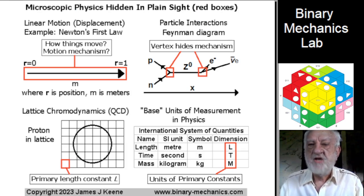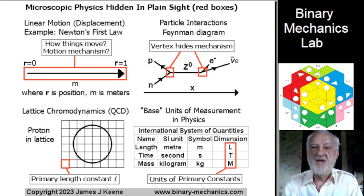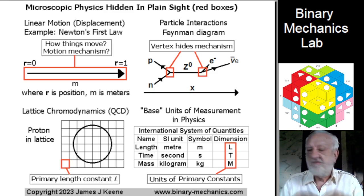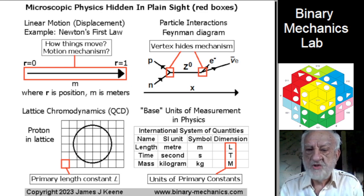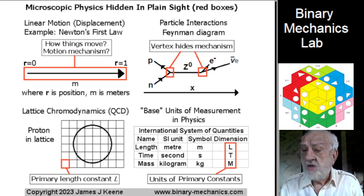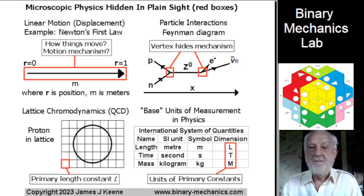But for decades, the microscopic mechanism of how things work has been hidden in plain sight. For motion in Newton's laws, drawing a line or a vector arrow from position r equals 0 to r equals 1 hides ignorance of how an object moves. In physics research, description of motion is only the first step. The end goal is knowing how things move. Luckily, the time development laws of binary mechanics provide a whole new level of detail about motion mechanism.